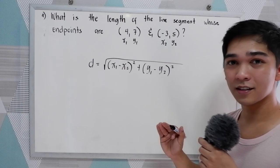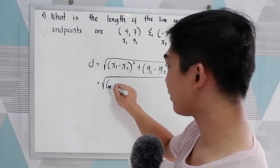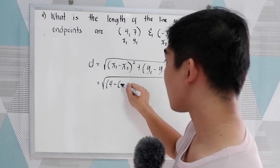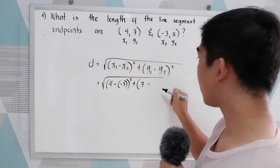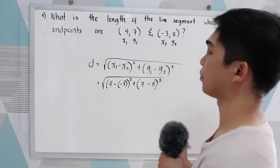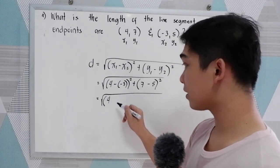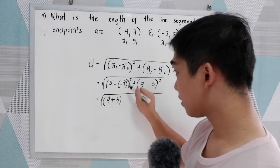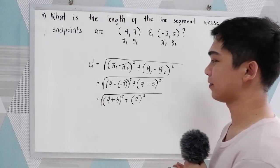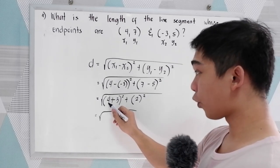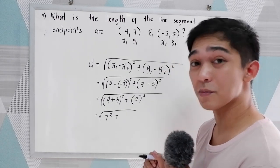After writing the formula, substitute the given. So d equals the square root of (x₁ − x₂)² — that is 4 minus negative 3 — plus (y₁ − y₂)² — that is 7 minus 5, raised to 2. Simplifying: 4 minus negative 3, negative times negative becomes positive, so we get 4 plus 3, which is 7, raised to 2, plus (7 minus 5) = 2, raised to 2. So we have 7 squared, which is 49, plus 2 squared, which is 4.